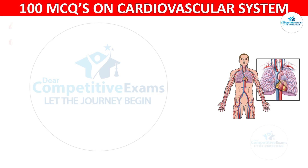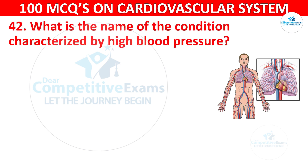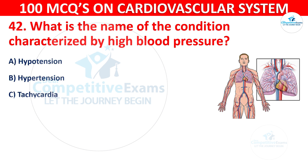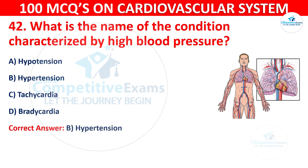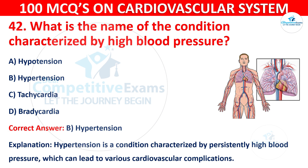Question 42: What is the name of the condition characterized by high blood pressure? Options are: Hypotension, Hypertension, Tachycardia, or Bradycardia. The correct answer is B, Hypertension. Hypertension is a condition characterized by persistently high blood pressure, which can lead to various cardiovascular complications.